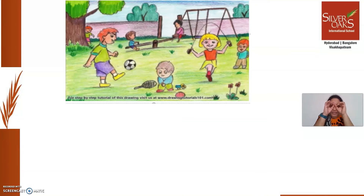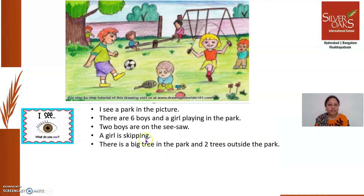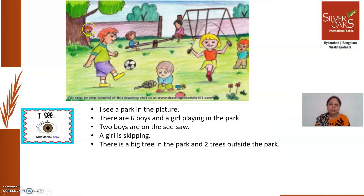There is a small boy in the park holding a ball in his hand and there are a few toys beside him. By seeing the picture we are framing sentences — seeing what things and people are there and what they are doing. So we can read: I see a park in the picture. There are six boys and a girl playing in the park. Two boys are on the seesaw, a girl is skipping, there is a big tree in the park and two trees outside. You can also add: there is a small boy holding a ball, there is a boy behind the tree — all these sentences you can add.